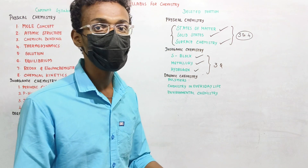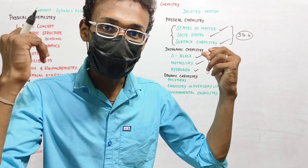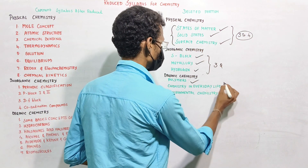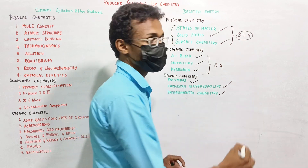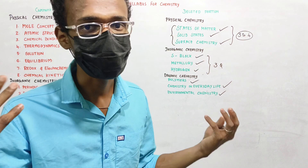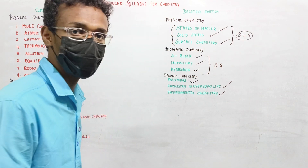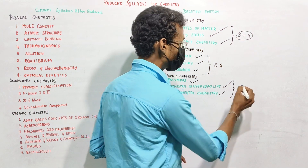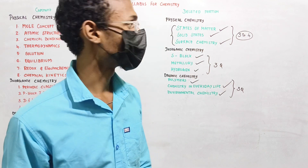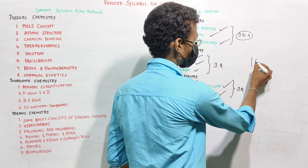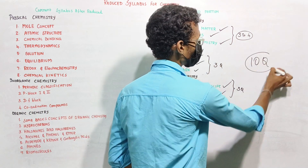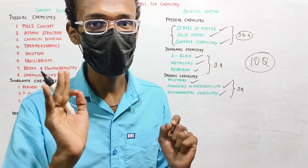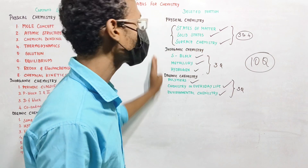For organic chemistry students, the topics of polymers and biomolecules are important. From these three lessons, we can target three questions. If you want to learn about ten questions, that is possible — within three minutes you can learn the content for ten questions.